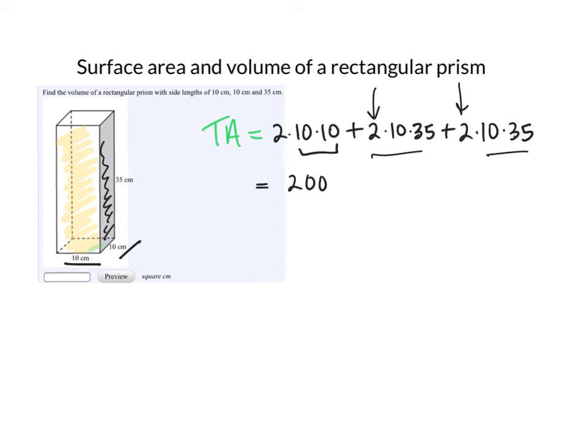So we'll add all this up. This is 200 plus 700 plus 700, so that ends up being 1,600. And this is area measured in centimeters squared, or square centimeters.